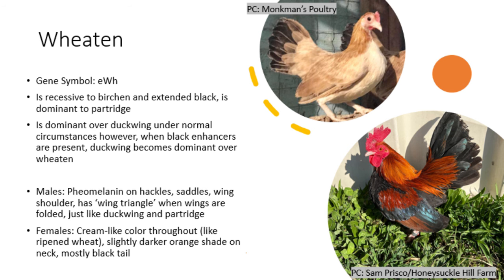The fourth allele in order of dominance is Wheaten, with the gene symbol lowercase e superscript WH. It has been established that when bred to Extended Black and Birchen, Wheaten is recessive. However, Wheaten is dominant over Duckwing and Partridge. But when black enhancers are present, Wheaten becomes recessive to Duckwing.